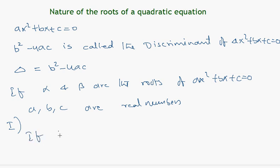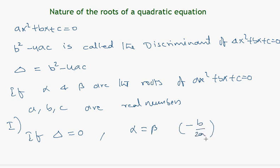Case 1: if delta equals zero, which means b squared minus 4ac equals zero, then we have equal and repeated roots — alpha equals beta, which equals negative b over 2a.